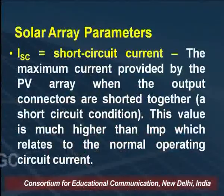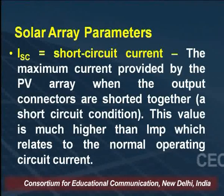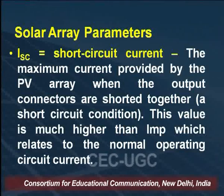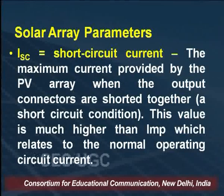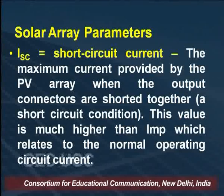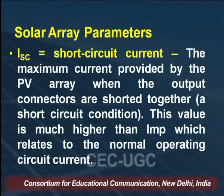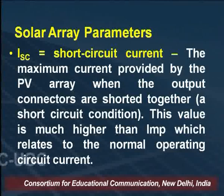The second important parameter is ISC, the short circuit current. This is the maximum current provided by the photovoltaic array when the output connectors are shorted together. This value is much higher than IMP, which relates to the normal operating circuit current. At zero voltage we get ISC — the maximum current value is represented by the short circuit current.